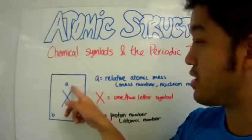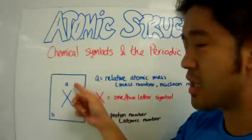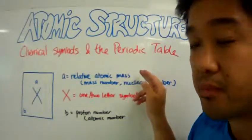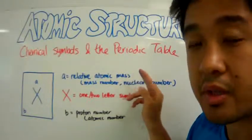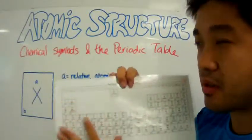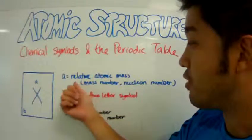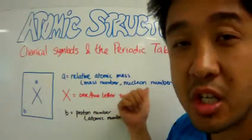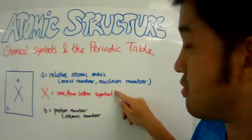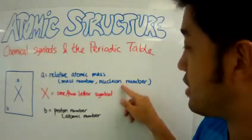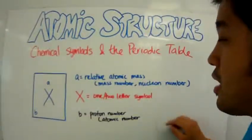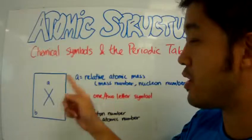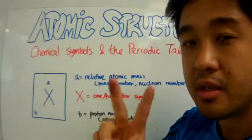So this number at the top, this bigger number at the top, is what we call a relative atomic mass. Remember that the mass of the atom is compared to the standard of a carbon-12 atom. Every mass on the periodic table is compared to carbon-12. The relative atomic mass is also known as the mass number or the nucleon number. Nucleon is a derivative of the word nucleus. This X is the symbol of the element or atom. It's noted by one or two letters. The first letter should be in uppercase and if there's a second letter, it should be in lowercase.